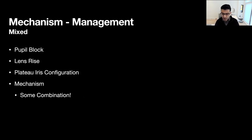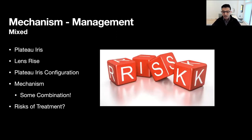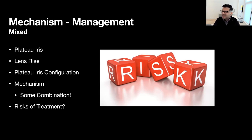Practically, many of our patients have some combination of different mechanisms. We really need to determine to the best of our abilities what the dominant mechanism is, and from there work in a stepwise approach. We must always take into account the risks of treatment. If a patient is PACS secondary to lens rise, mechanism-based decision-making would argue that we proceed with lens extraction. However, does that make logical sense? Should every patient with narrow angles secondary to lens rise undergo surgery to manage a condition they may or may never actually encounter?